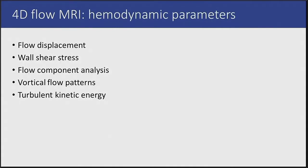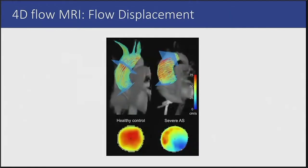The parameters and analyses I will discuss are flow displacement, wall shear stress, flow component analysis, vortical flow patterns, and turbulent kinetic energy. Flow displacement is a parameter used to quantify the eccentricity of the blood flow in the ascending aorta — in other words, how far the weighted center of the velocities is from the center line of the aorta. In this example, you see that the healthy control does not have any flow displacement, while the patient with severe AS does. Flow displacement has been shown to correlate with dilatation of the ascending aorta.